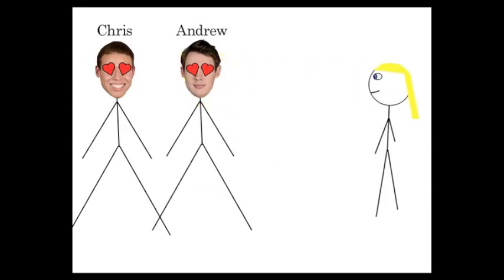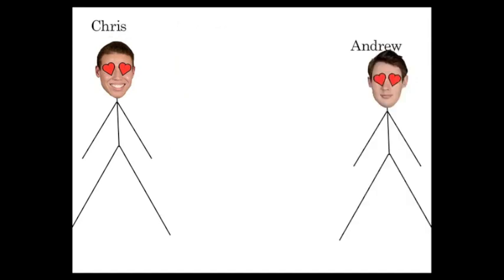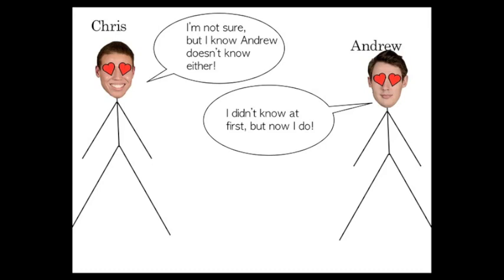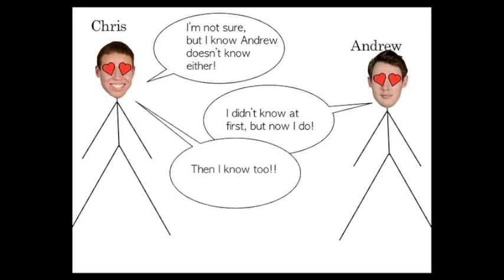They're not allowed to tell each other, but after she does this, they have this dialogue. Chris starts by saying, I'm not sure, but I know that Andrew doesn't know either. And then Andrew says, I didn't know at first, but now I do. And then Chris says, I know too then. And at this point, most people are like, how did they figure this out based on this one conversation?